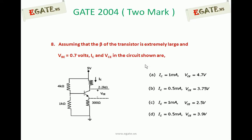Assuming that the beta of the transistor is extremely large and VBE is 0.7 volts, then IC and VCE in the circuit shown are - look at the circuit. For that circuit, beta was given as very large and VBE is given as 0.7V. Then IC and VCE as indicated in the circuit diagram - this is IC and this is VCE.